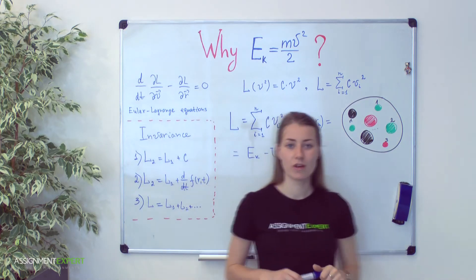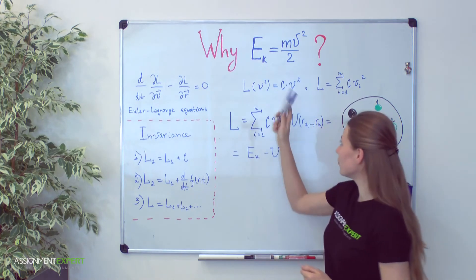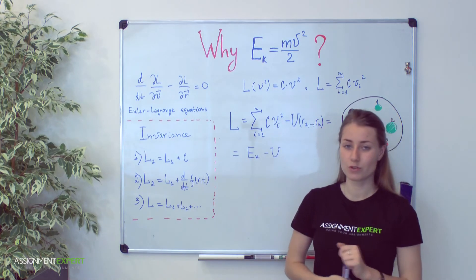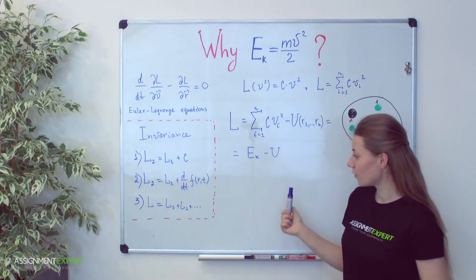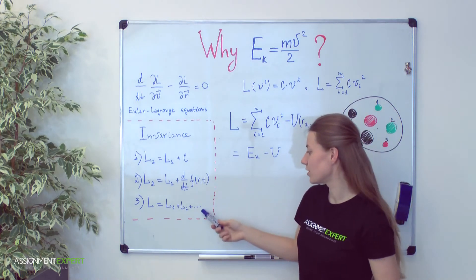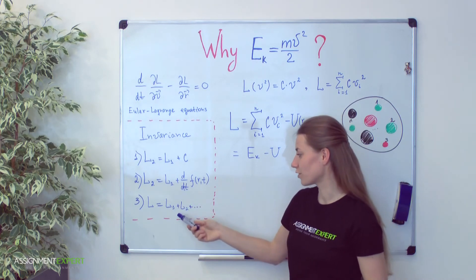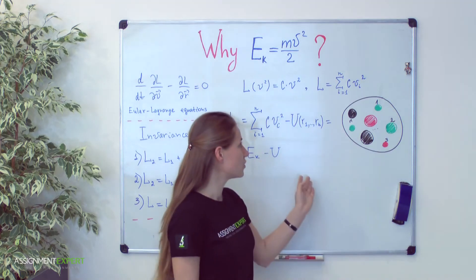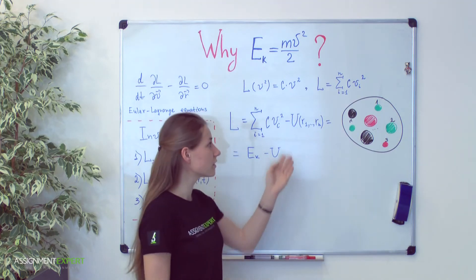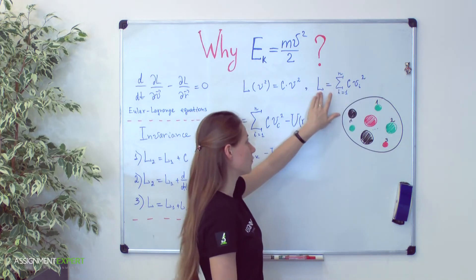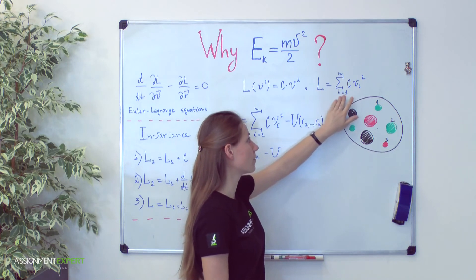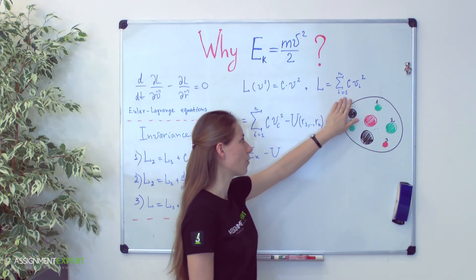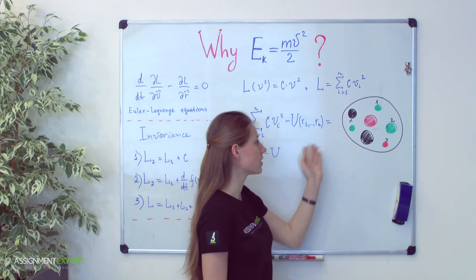By the way, we can generalize our one free particle into the system of non-interactive free particles. For it we can use our third property of additivity of Lagrange function. For such big system of non-interactive particles we will get such formula where we have sum over all the particles. i goes from 1 to n, where n is number of particles.